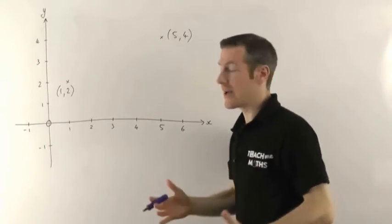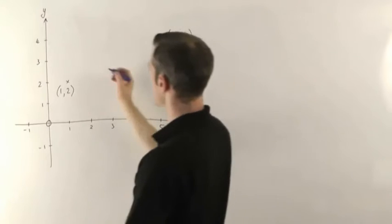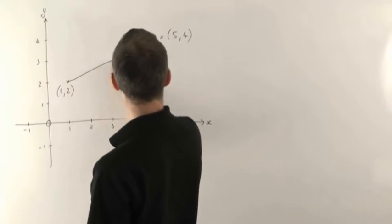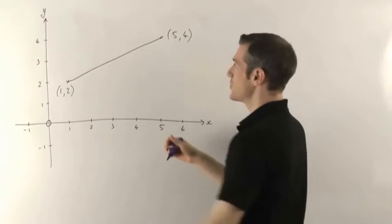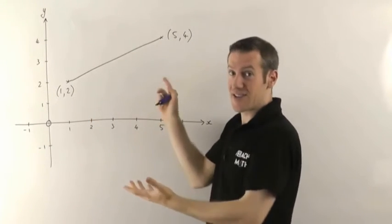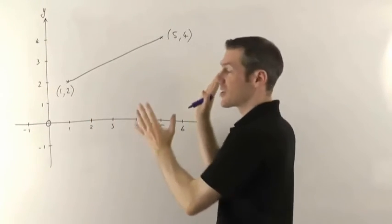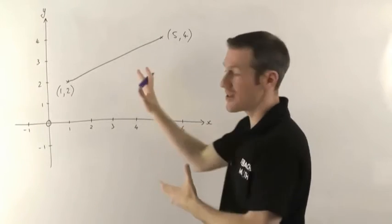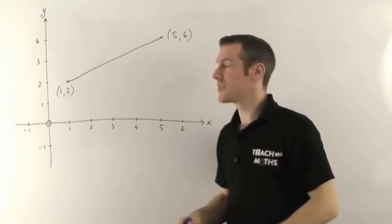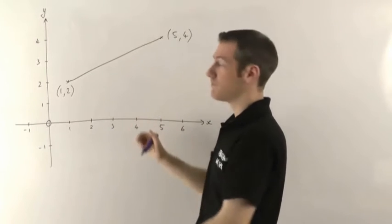Now if they give you a line instead of two points, so imagine we've got a line that connects these two points together, then the first thing you need to do is just work out what the coordinates of the ends of the line are. Either way you need the coordinates. The method you use to find the midpoint is always based on the coordinates, so find the coordinates first if you haven't been given them.